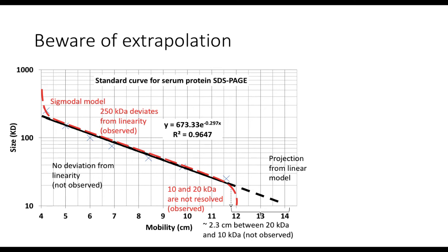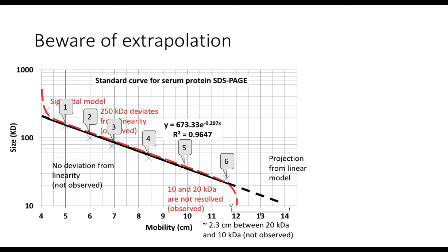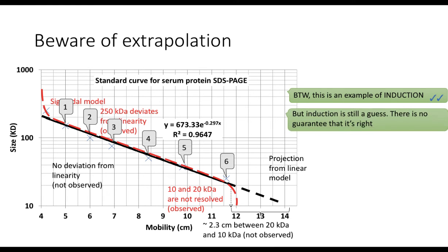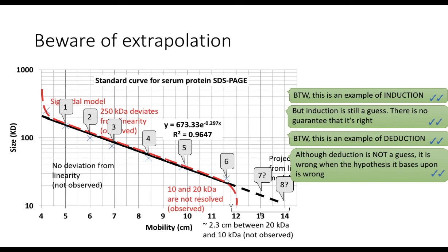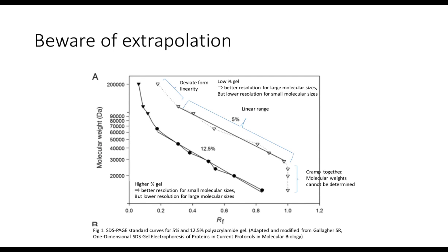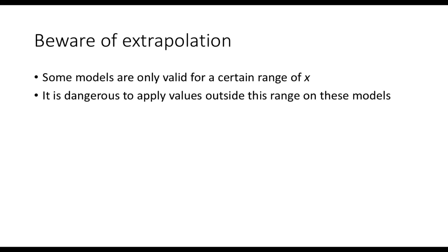By the way, the way we come up with this hypothesis is called induction. You start off with an incomplete set of observations — in this case, the data points you have. Based on these incomplete observations, you hypothesize that the same linear relationship will hold true for all values of x. But any hypothesis could be wrong. These are the predictions from your model, and this process is known as deduction. The predictions could also be false when the hypothesis is not true. Indeed, the relationship deviates from linear when the protein is too small or too big. So beware of extrapolation, as some models might only work for a certain range of x.